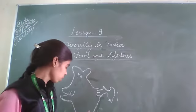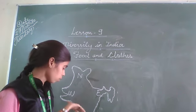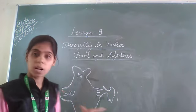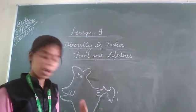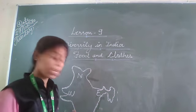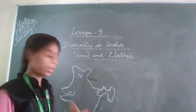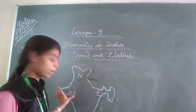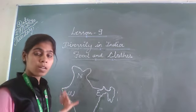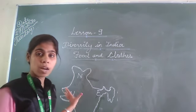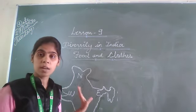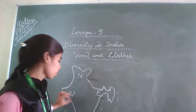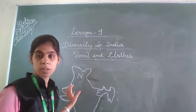In the south, you can see Karnataka, Andhra Pradesh, and Kerala — these states are called the southern states. Next, in the western part of India, you can find Maharashtra, Rajasthan, and Gujarat. These are the western states.